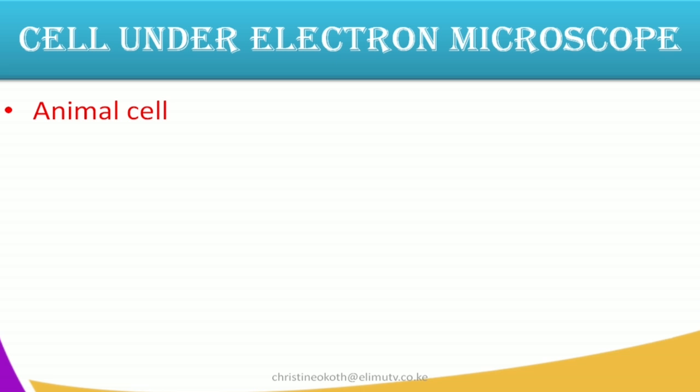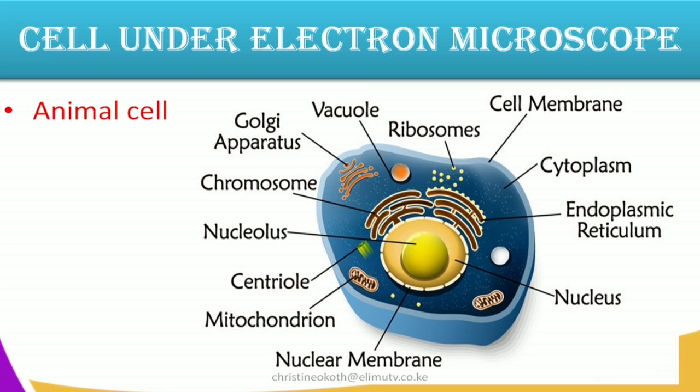Then when you come to the animal cell, there are also additional structures that you see. For example, you can observe the ribosomes, you can see the vacuole, you can see the endoplasmic reticulum — the smooth and the rough. There is also an additional structure we call the centrioles, and we also have the mitochondrion, the Golgi apparatus, and the chromosomes.